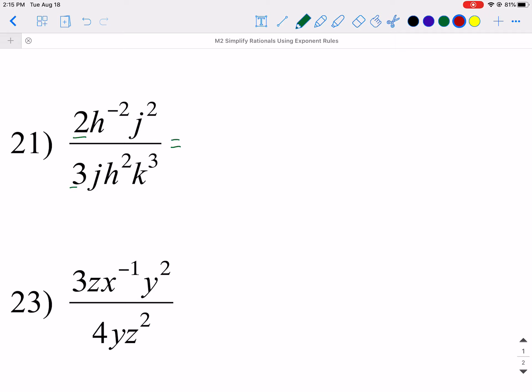Start with the numbers. The numbers cannot be reduced. 2 over 3 cannot be reduced, so I'm just going to simply copy them over here. So those are gone. I go in this order. I just take from the top the next variable that shows up, and I look to see if there's anything to combine it with on the top or the bottom. In this case, I can see that I have an h² on the bottom. So I have a negative 2, take away 2. So that is really a negative 4. So I have h to the negative 4.